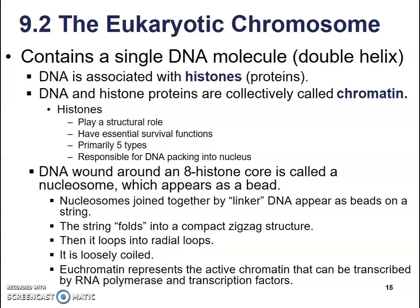Nucleosomes are joined together by a linker DNA and they appear as beads on a string. The string then folds into a compact zigzag structure, then loops into radial loops and then it's loosely coiled.